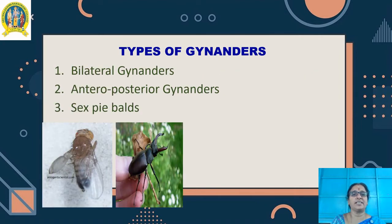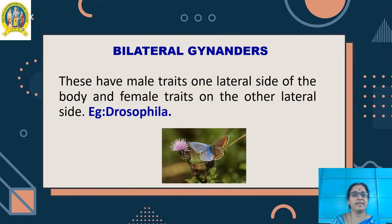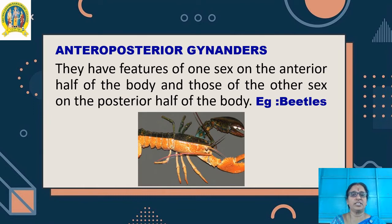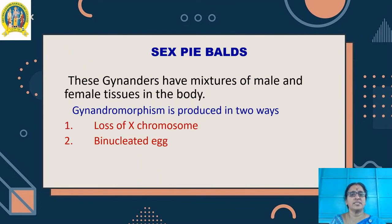There are three types of gynanders: bilateral gynandromorphs, anterior-posterior gynandromorphs, and sex piebalds. Bilateral gynandromorphs have male traits on one lateral side of the body and female traits on the other lateral side, for example Drosophila. Antero-posterior gynandromorphs have features of one sex on the anterior half of the body and those of the other sex on the posterior half, for example beetles. The third category, sex piebalds, are gynandromorphs that have mixtures of male and female tissues in their body.